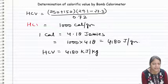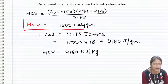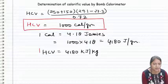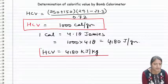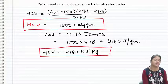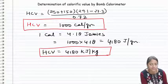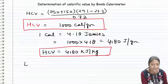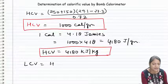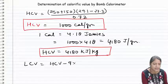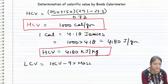So we have seen HCV in two units. If HCV is asked in calorie per gram, this answer will come, and if asked in joules, this answer will come. LCV has not been asked, but if LCV was asked, then we would use the formula: HCV minus 9 into mass of hydrogen into latent heat of steam. In the question, percentage of hydrogen is not given, so it cannot be calculated.